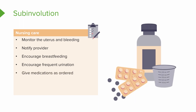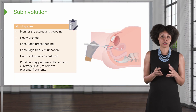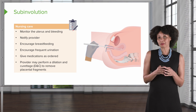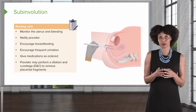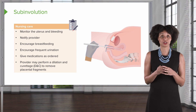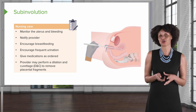There may be medications ordered to help the uterus contract, such as oxytocin, and we want to make sure those are administered as scheduled. Sometimes none of these tactics work, and especially in the case of retained placental fragments, it may be necessary for the provider to go in and remove those retained parts — a procedure known as dilation and curettage (D&C).